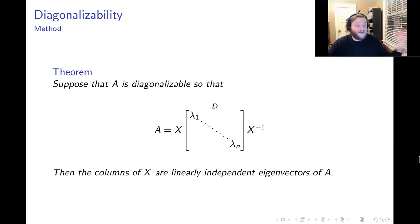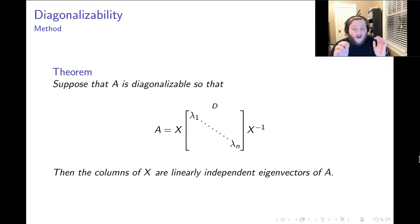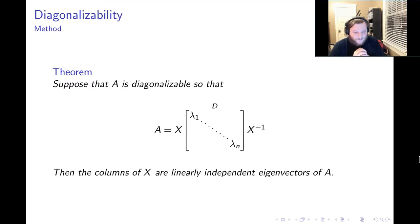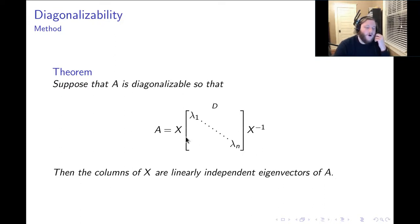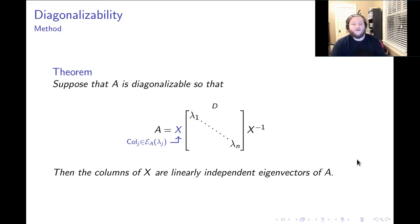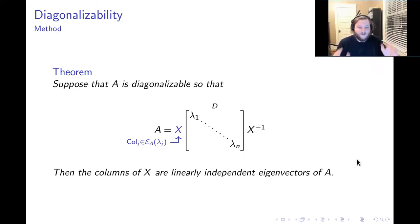Now let's say our matrix passes the test. How do we produce the factorization A = X times D times X inverse? We already know that D has on its diagonal all of the eigenvalues of our matrix, accounting for multiplicity. The columns of X will always be linearly independent eigenvectors of A. The j-th column of X will be one of the eigenvectors corresponding to the j-th eigenvalue sitting on the diagonal of D. So to produce the factorization, we find bases for all of the eigenspaces and put those basis vectors into the columns of X.